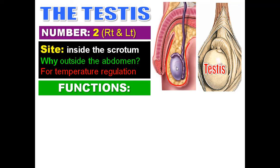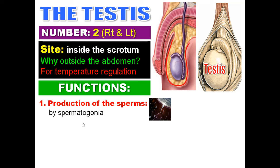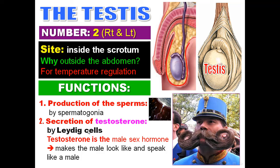The testis has two main functions. Number one: production of sperms by spermatogonia. Number two: production of the male sex hormone testosterone by cells called Leydig cells. Testosterone is responsible for the external sex characters of the male. So the testis has two types of cells: spermatogonia for formation of sperms, and Leydig cells for formation of testosterone. It also has another type of cells called Sertoli cells, which will be discussed in another lecture.